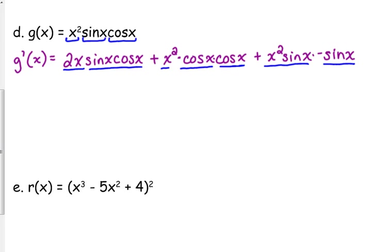Let's look at simplifying here. We're going to use some trig identities that you've probably never seen before — what we call double angle formulas. For this first expression, I'm going to put the x in front and pair the 2 with sine of x and cosine of x, because 2 sine of x times cosine of x is equivalent to simply the sine of 2x. So we can simplify that expression there.